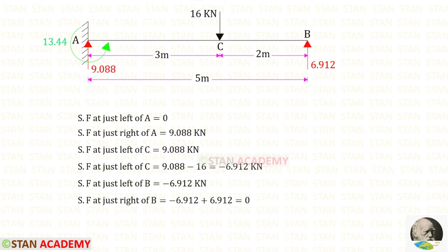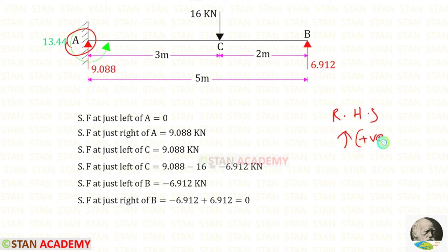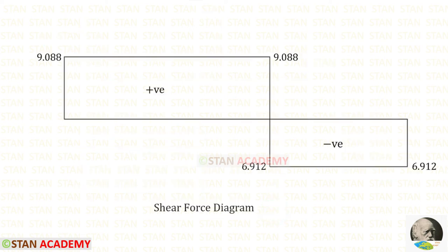Now we are going to draw the shear force diagram. I will find the shear force values starting from point A, using the right-hand side rule: upwards is positive and downwards is negative. Using that rule we can find all the values. Here you can see the shear force diagram.